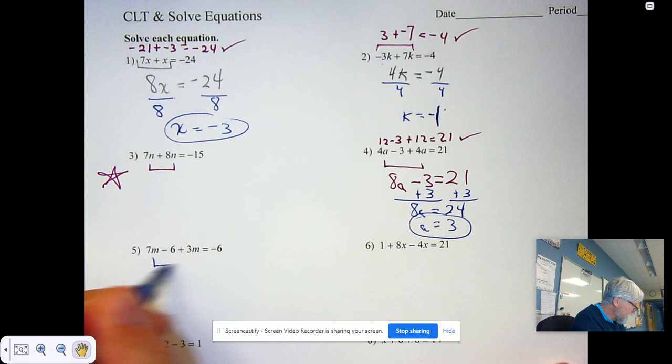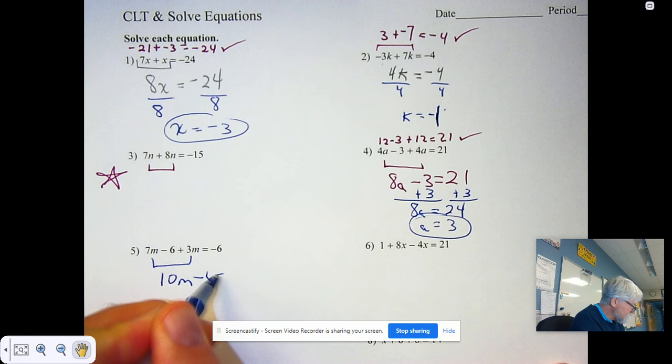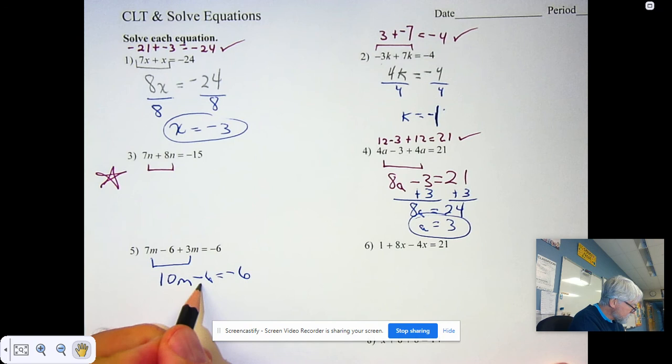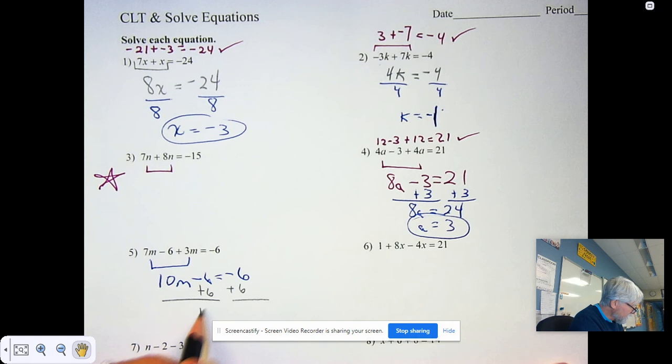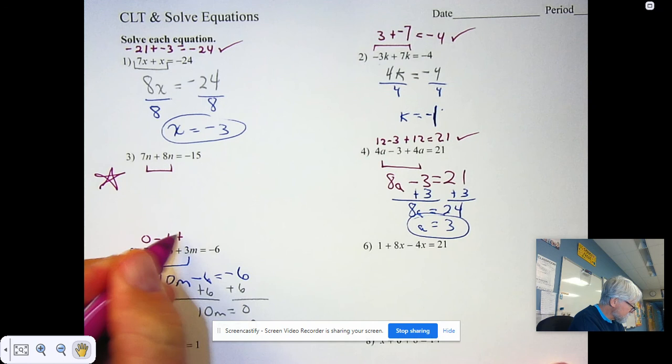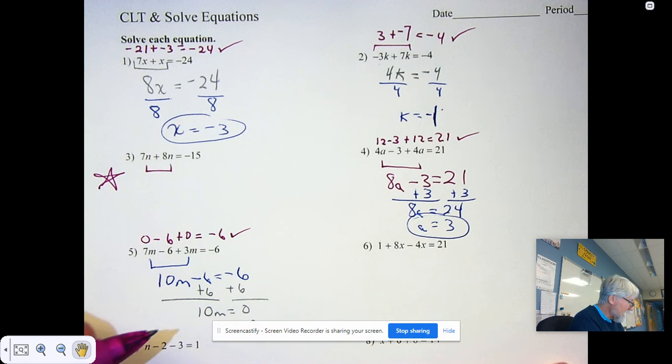We combine the like terms. 7m and 3m is 10m. The rest of it minus 6 equals negative 6 stays the same. Now I'm ready to add 6 to both sides because I'm going to undo the adding or subtracting first. If 10m is 0, then m is 0. I check. 0 minus 6 plus 0 does equal negative 6.